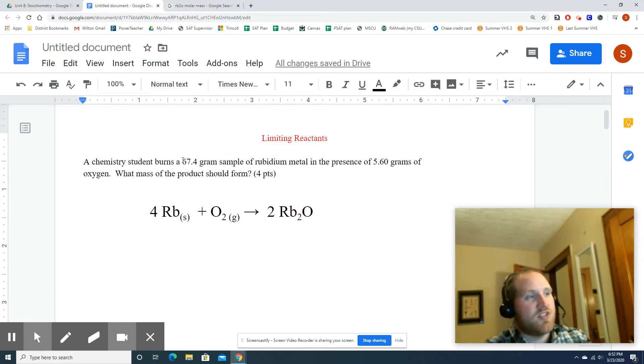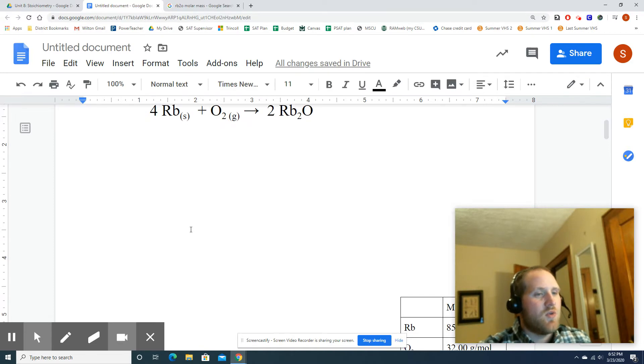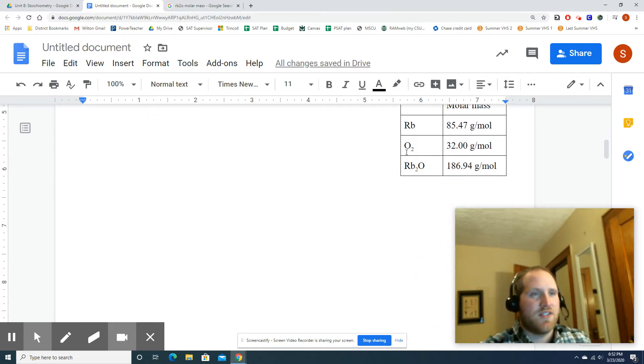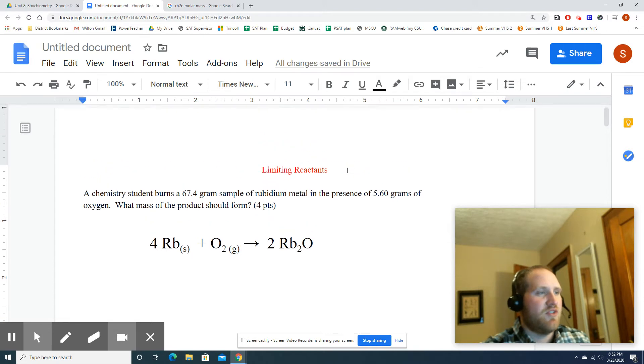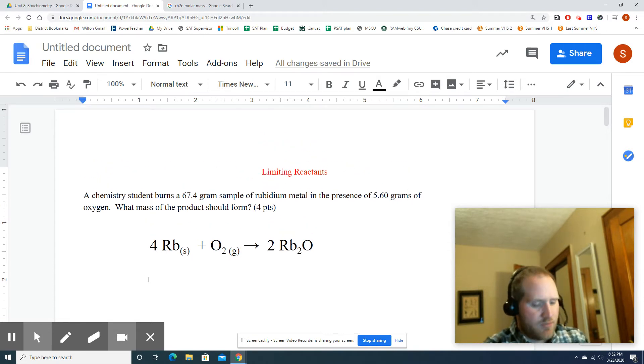So how are we going to work this one out? Well, before, you would just take your grams, turn them into moles, and then what I call run it through the grid, apply the stoichiometry. Well, now you just have to do this with both of them. You have to take this reactant and this reactant, turn them both into moles, and then you need to compare. So I have some molar masses worked out already, just for the sake of time. So rubidium is 85.47. So I'm going to take my 67.4 times one mole over 85.47.